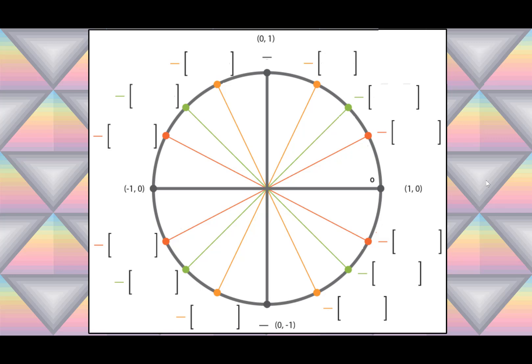Now let's fill in our radian values for each angle. For the positive x-axis the radian value is 0. On the negative x-axis our radian value is π. Halfway between 0 and π is π/2. One-half more than π is 3π/2, and a full circle is 2π. 2π and 0 are coterminal angles because they share the same terminal side.